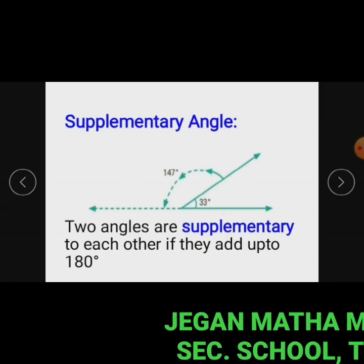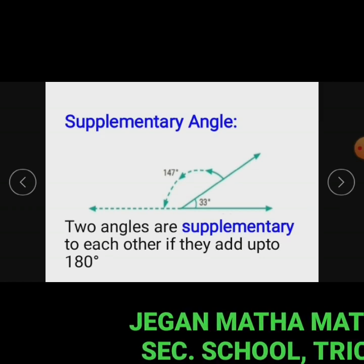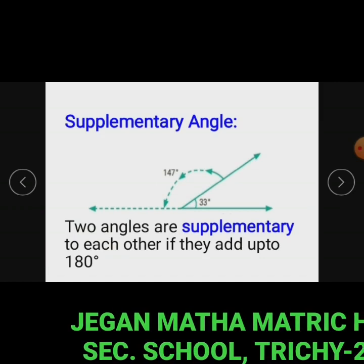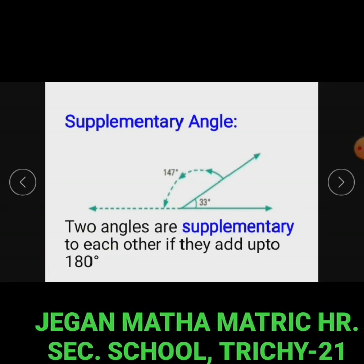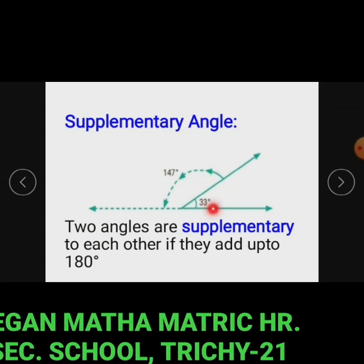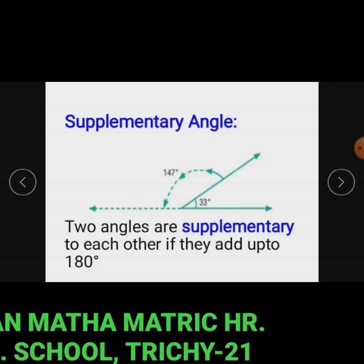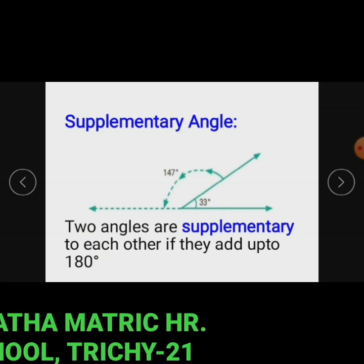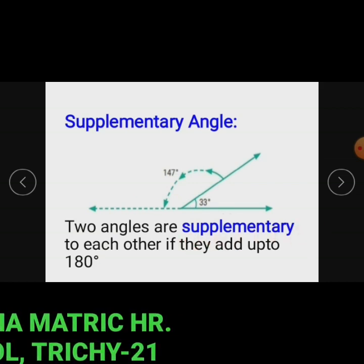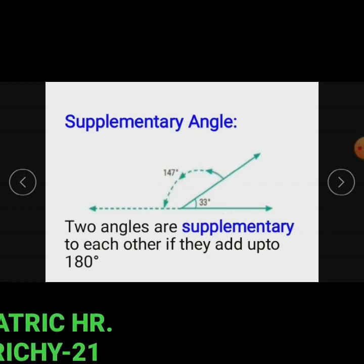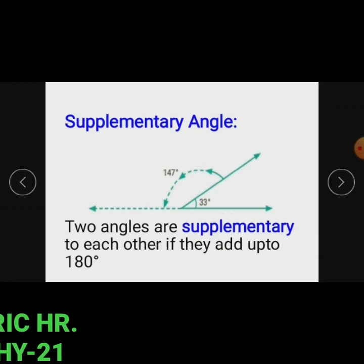Supplementary angles: two angles are supplementary to each other if they add up to 180 degrees. For example, 147 plus 33 equals 180 degrees. So 147 is the supplementary angle of 33, and 33 is the supplementary angle of 147 degrees.